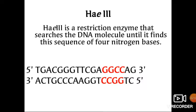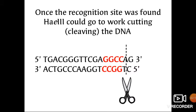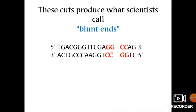The restriction site for HaeIII is GGCC. Once this site is found by the enzyme, the cut is made at the same nucleotide on both strands so that there is no overhang. The ends produced in this way are called blunt ends.